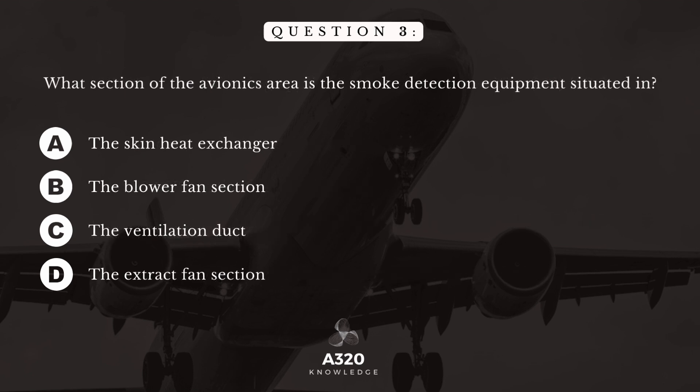Question 3. What section of the avionics area is the smoke detection equipment situated in? A. The skin heat exchanger. B. The blower fan section. C. The ventilation duct. D. The extract fan section.